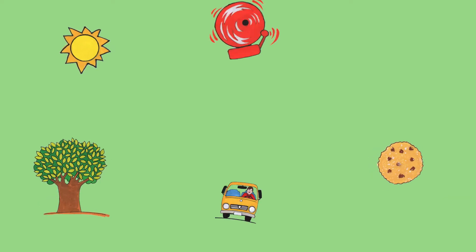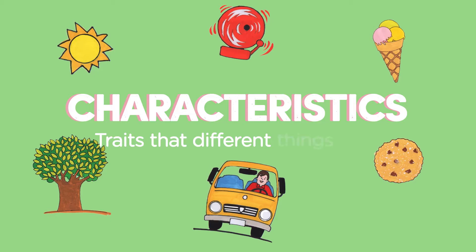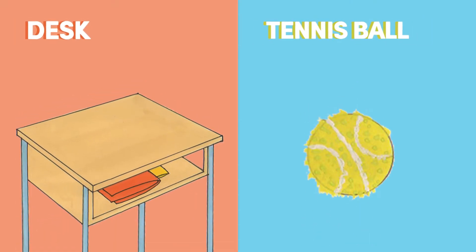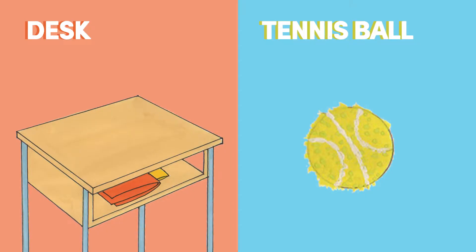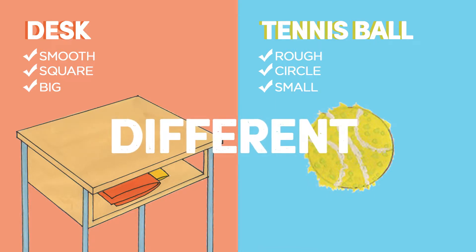All of the things around you have characteristics. What are characteristics? They're traits that different things have. For example, your desk has a different texture to a tennis ball. Your desk is smooth to the touch, while the tennis ball is rough. A tennis ball is round and small, while a desk is square and big. These characteristics are what makes the two things different. The characteristics of a desk make it a desk, and the same for the tennis ball.